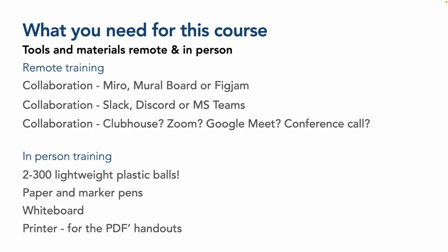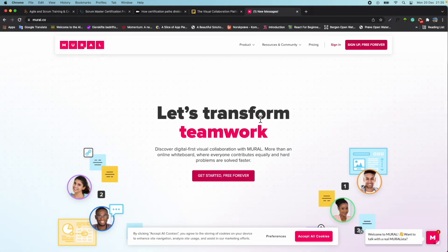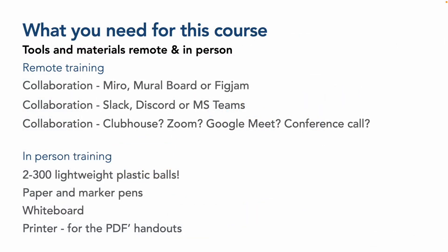If you haven't come across these before: Miro, Mural, or FigJam are interactive whiteboards where you can create sticky notes, write, and create notes using different templates. I'll show you the websites for Miro and Mural briefly, and if you haven't got an account, I strongly suggest you sign up. For other types of collaboration — visual, written, or audio-based — you may want to consider Slack, Discord, MS Teams, Clubhouse, Zoom, Google Meet, or even an old-fashioned conference call. The caveat with Clubhouse is that all clubs are open to the public, so you may have random people jumping in and wondering what you're doing in your meeting.